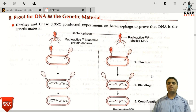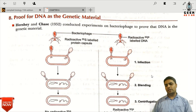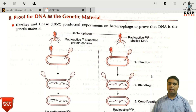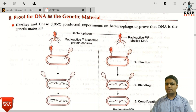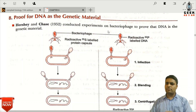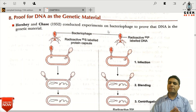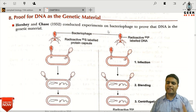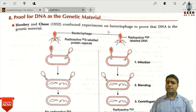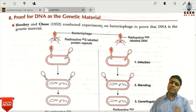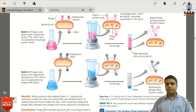In this lecture, we are going to study the proof for DNA as a genetic material. This proof was given by Hershey and Chase. They gave this proof in 1952. They conducted an experiment on the bacteriophage. The bacteriophage is a virus which infects bacteria. You can see this diagram to understand the experiment.